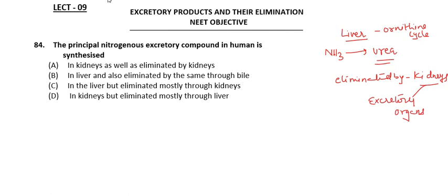The option 'synthesized in liver and eliminated through bile' is also incorrect — bile contains bile pigments like bilirubin, biliverdin, and bile salts for fat emulsification. The correct answer is option C: synthesized in the liver but eliminated mostly through the kidneys.